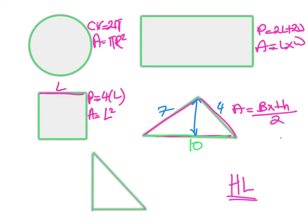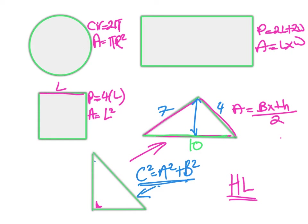The last shape is a right-angle triangle. Area and perimeter work the same as any triangle, but we also have Pythagoras's theorem: c² = a² + b². We might need that to figure out the length of any side.